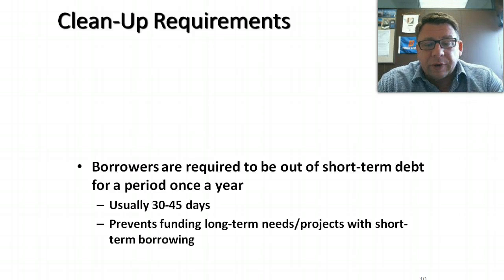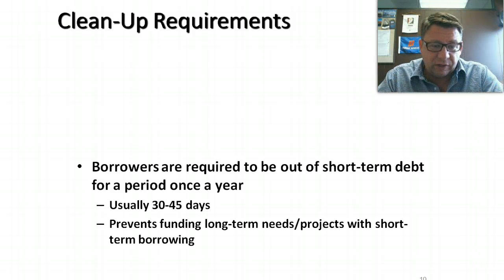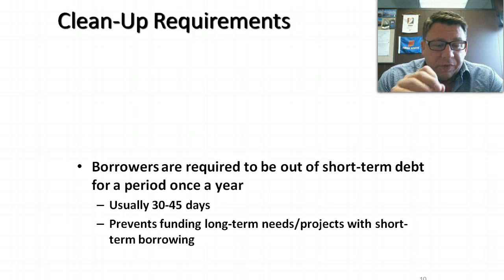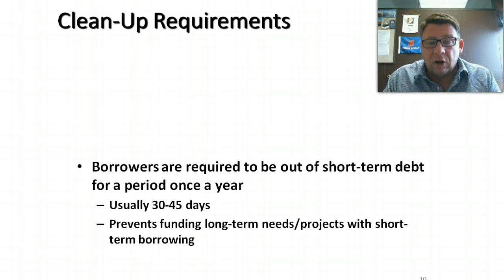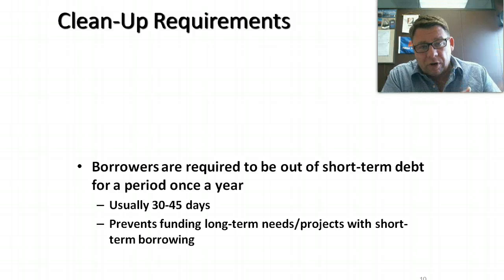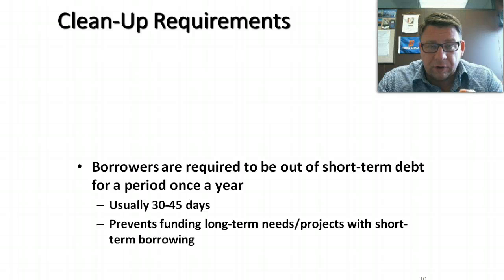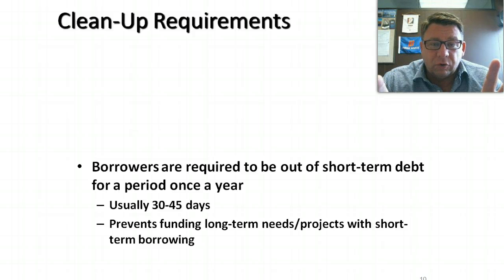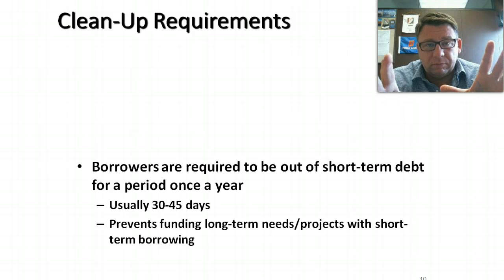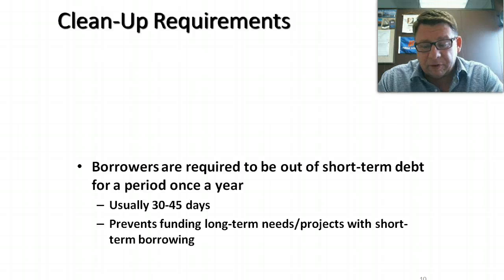With short-term debt, borrowers are required to be out of short-term debt for a period of once a year — usually 30 to 45 days within that year. This makes sure that short-term projects are being financed with short-term debt and prevents long-term projects from being financed with short-term borrowing. Remember that short-term borrowing is cheaper for companies, so banks aren't interested in doing that. If you're going to have a long-term project, you need to finance that with long-term debt — the bank makes more money doing that.